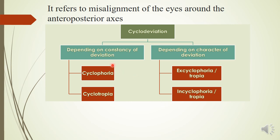It is further described into cyclophoria or cyclotropia. Cyclophoria means the moment you occlude one eye, the eye will go into an intorsion or extorsion state. Whereas cyclotropia means even without an occluder, the patient's eyes are found to be intorted or extorted. These cases are difficult to detect and can only be examined with a haploscopic device, double Maddox rod, or similar tools. Depending on the direction of the deviation, it can be differentiated into in-cyclo or x-cyclo.